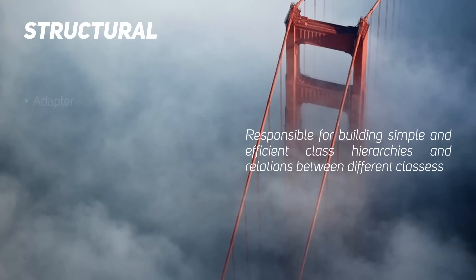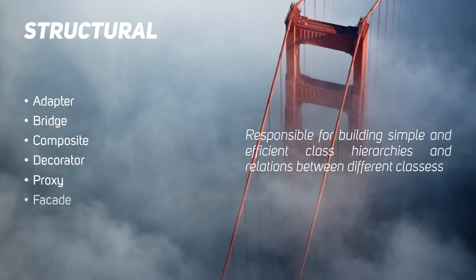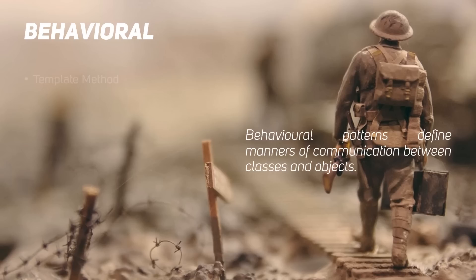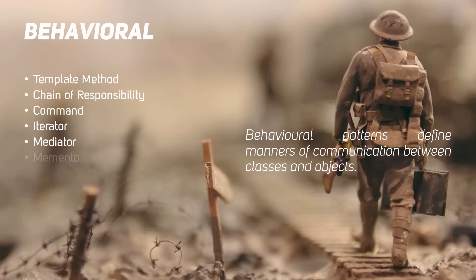Structural design patterns are responsible for building simple and efficient class hierarchies and relations between different classes. They consist of: Adapter, Bridge, Composite, Decorator, Proxy, Facade, and Flyweight. Behavioral patterns define manners of communication between classes and objects — this is the longest list: Template Method, Chain of Responsibility, Command, Iterator, Mediator, Memento, Observer, Strategy, State, and Visitor.